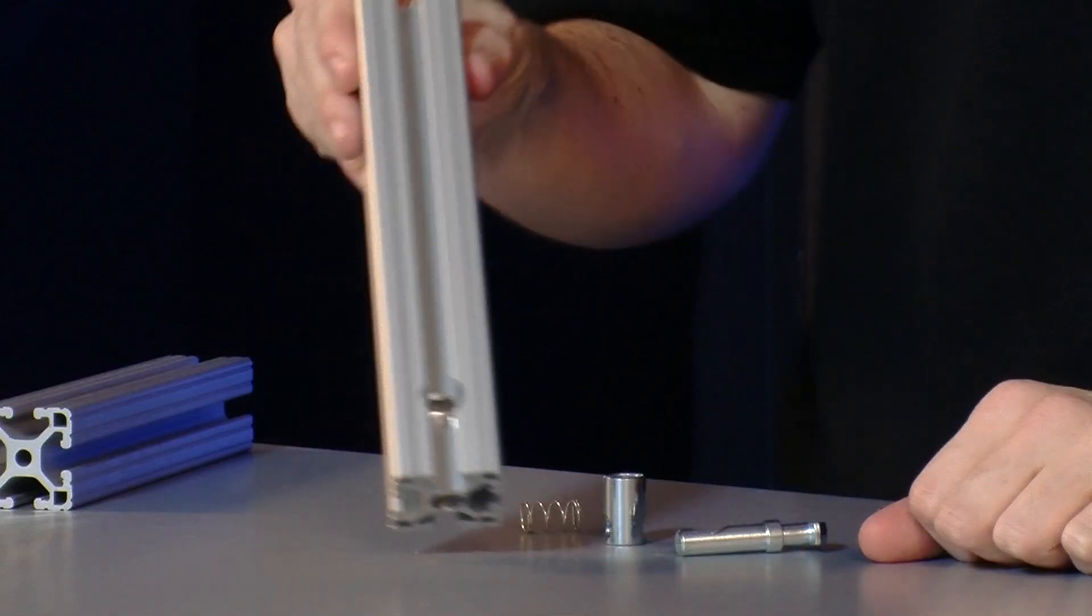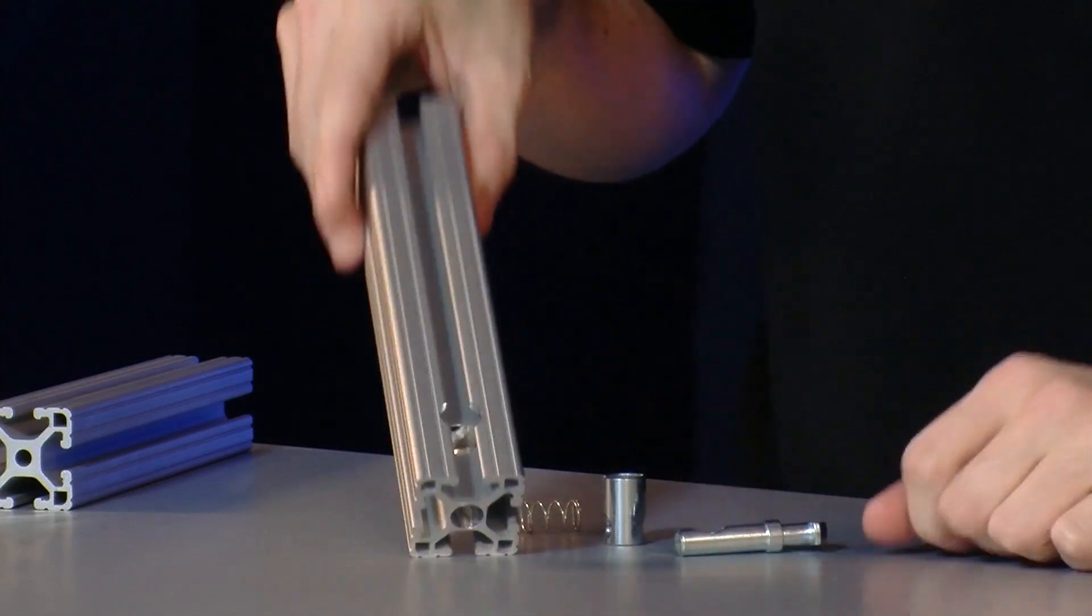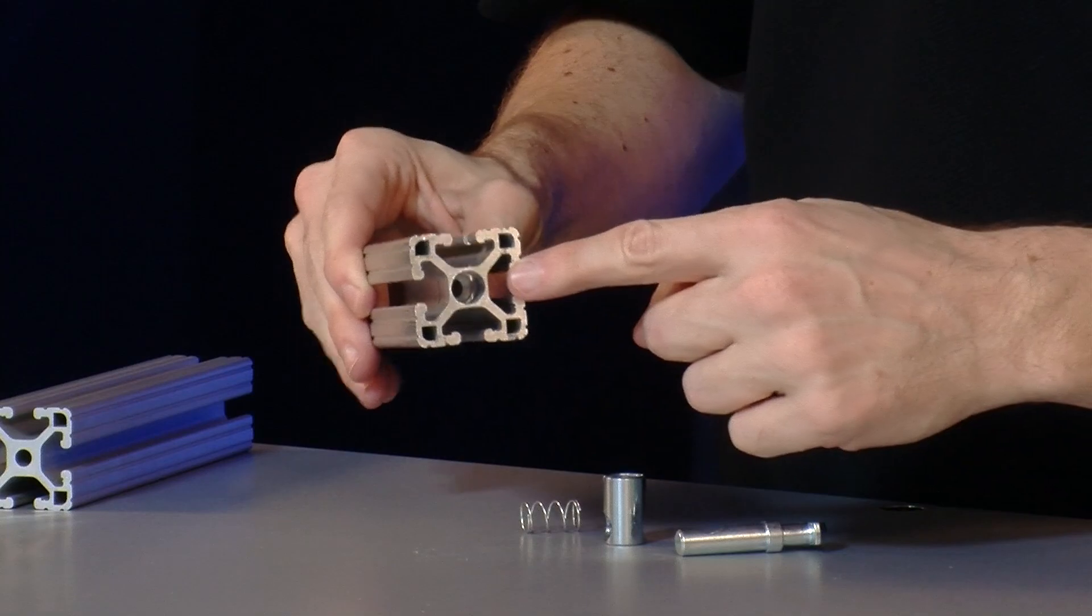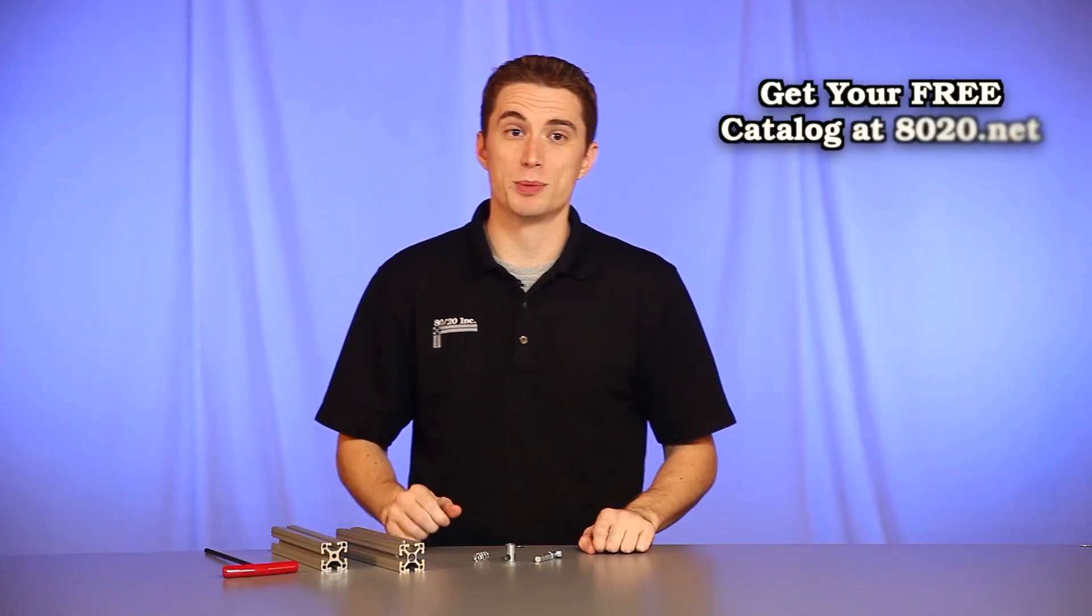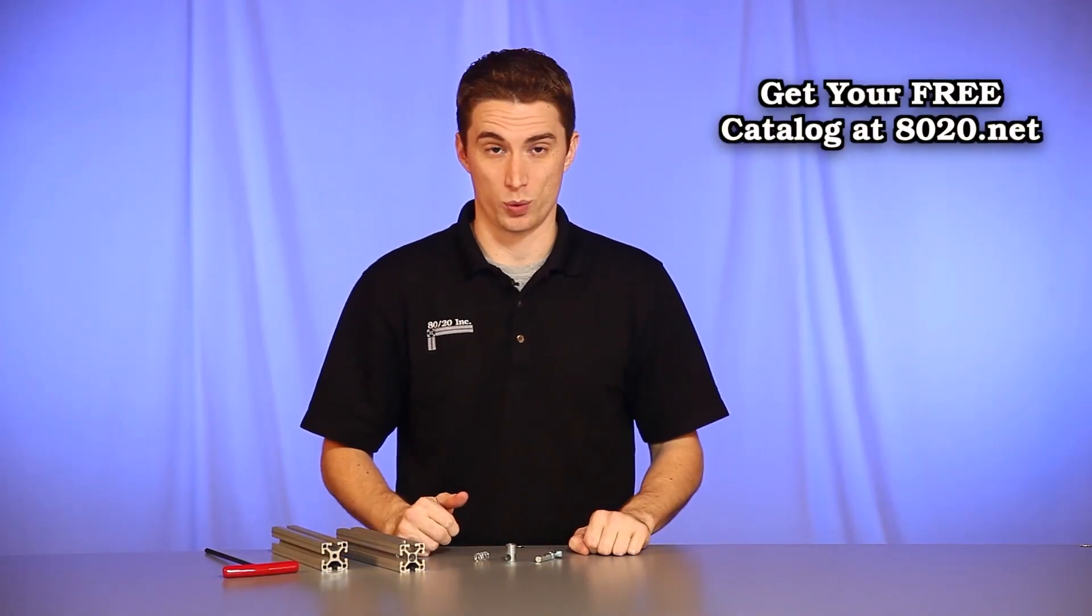Now one thing you'll want to keep in mind when using the central connector is one of your bars is getting machined with a counter bore service and a hole drilled in the center cavity of it. More information on central connector machining services can be found in the 8020 product catalog.